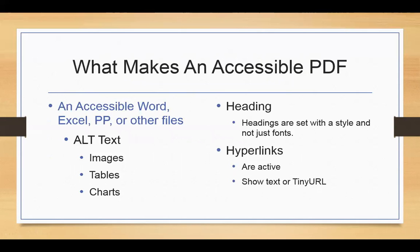What do you need to make an accessible PDF? Basically, anything you've built as an accessible Word file, Excel spreadsheet, or PowerPoint presentation — if it's gone through the accessibility checker — will be an accessible PDF when you save it, if you do it the right way. Some key things to be concerned with: make sure alt text is on any images, tables, or charts. And in a Word document, your headings should be labeled as headings — Heading 1, Heading 2, and so on — not just formatted with a different color, font size, or bold.